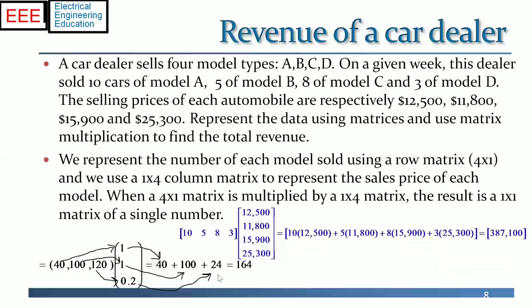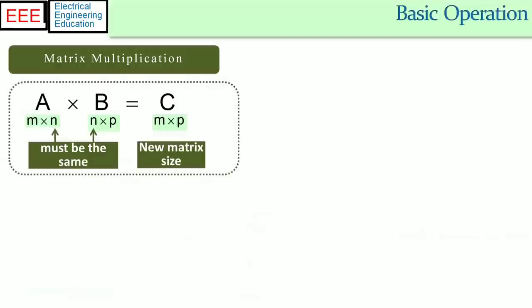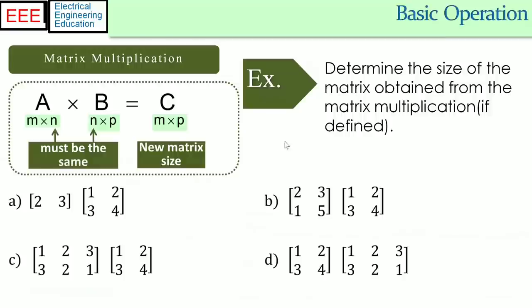We have another important operation: matrix multiplication. Given a matrix A of size M by N multiplied with another matrix B of size N by P, two matrices can be multiplied if the number of columns in the first matrix is equal to the number of rows of the second matrix. The result matrix will have a size M by P — it will have the number of rows equal to the first matrix and the number of columns equal to the second matrix.